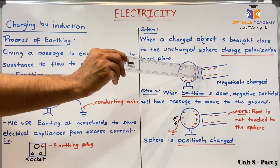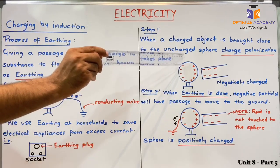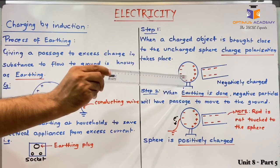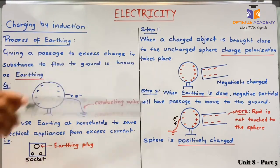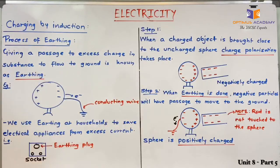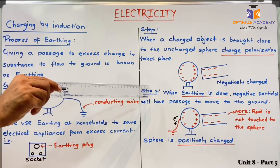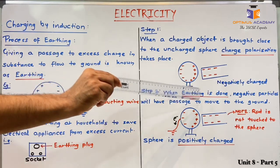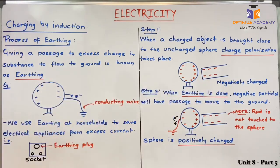This assembling of charges at the extreme ends is known as charge polarization. If the rod is brought even closer, these negative charges will assemble at the edge of the sphere, but from there they will not be able to go anywhere further away from the rod. To allow them to move even further, we proceed to the process of earthing.